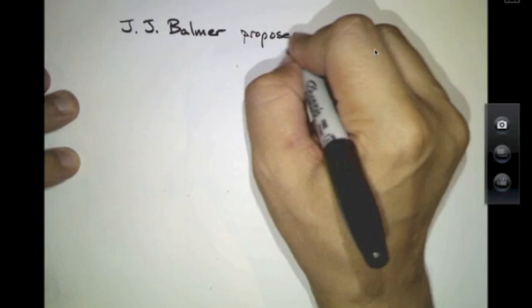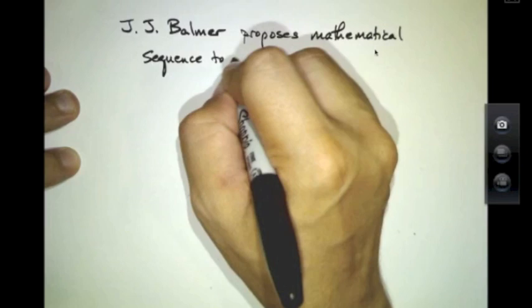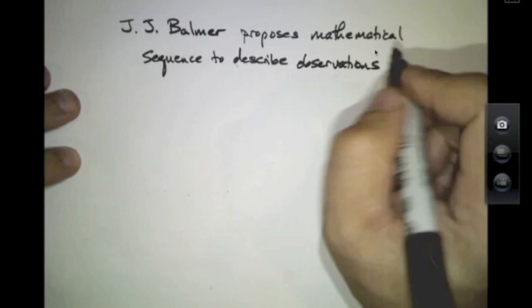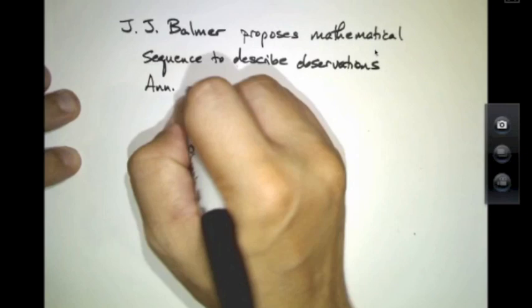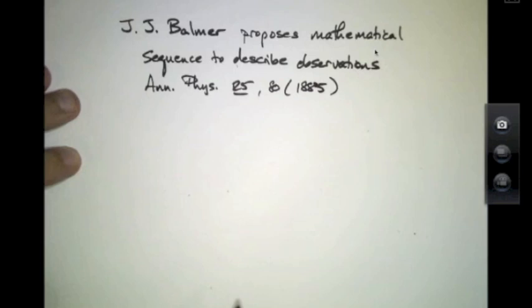He was actually a Swiss school teacher by the name of J.J. Balmer. He was first able to write down a mathematical characterization of these observations. Kind of interesting because that's for the school teacher. He did so in the journal Annals of Physics in the year 1885. So again, notice that this was well before Thomson even discovered the electron.